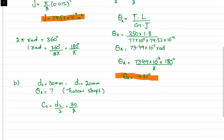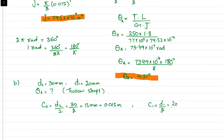The outer radius is c2 = d2/2 = 30/2 = 15 mm = 0.015 m. The inner radius is c1 = d1/2 = 20/2 = 10 mm = 0.010 m.